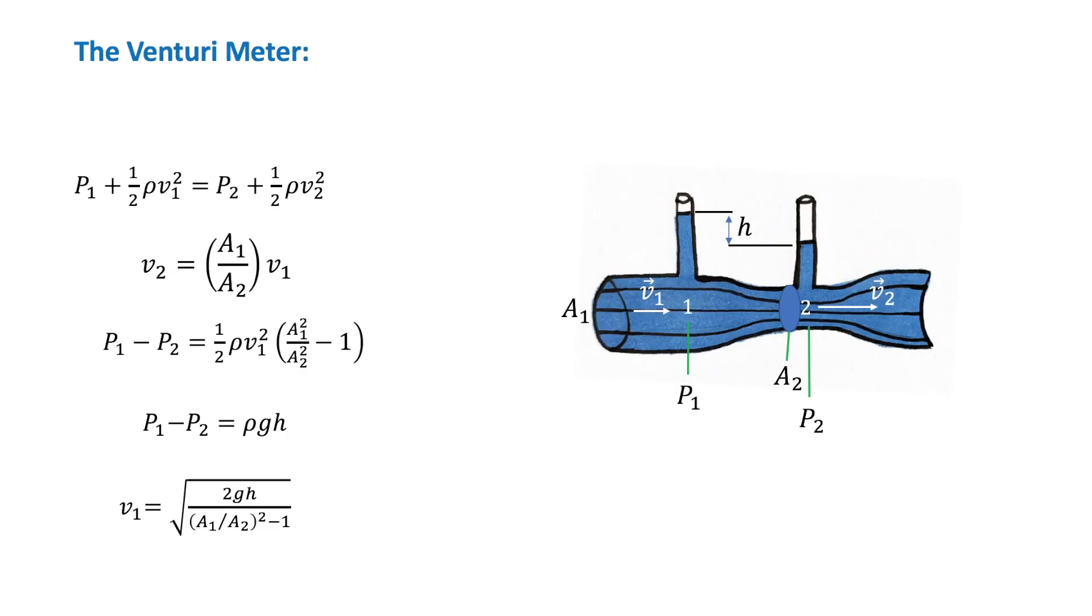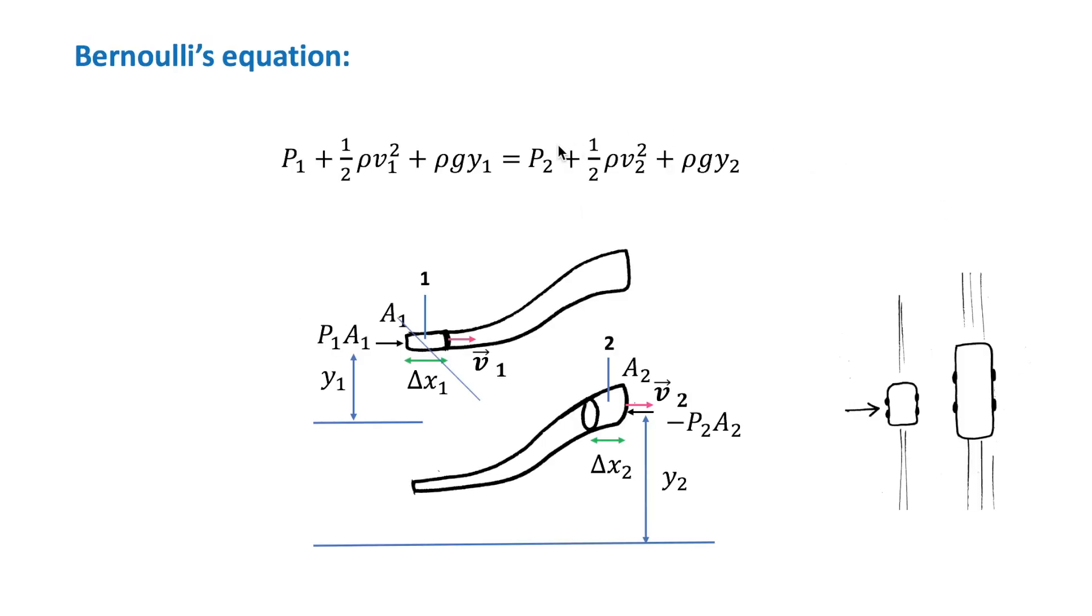So, we will discuss now the venturi meter, which is a device used to measure speed flow. The narrow part of the pipe is called the throat. We can find the flow speed V1 at point 1 by using Bernoulli's equation. As you can see, 1 and 2 are at the same elevation, so we don't have these two terms here, because Y1 is equal to Y2.